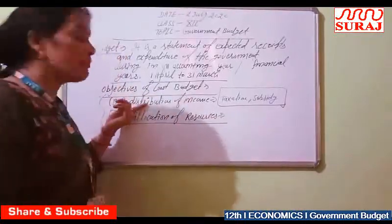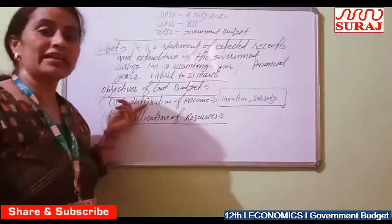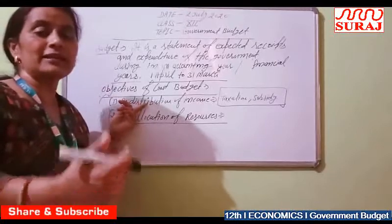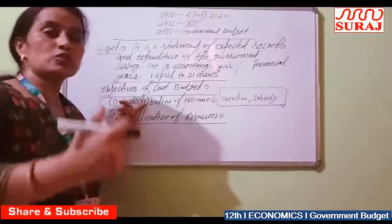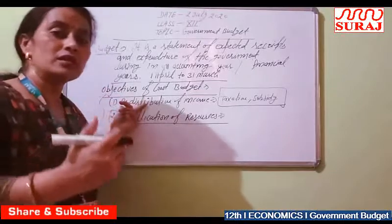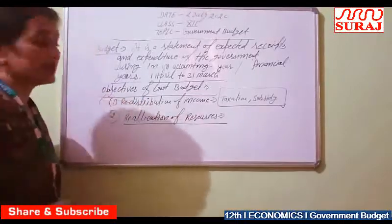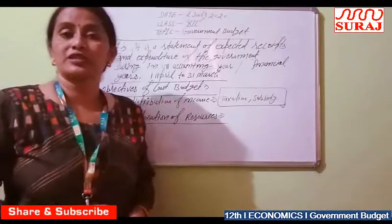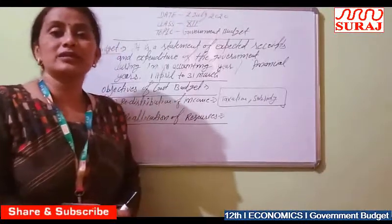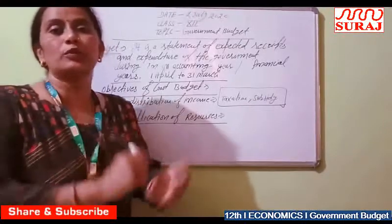By this process, through their budgetary policy, the government can control unequal distribution in our economy. Income is redistributed by the budgetary policy among the richest and poorest sections, so that the gap between the richest and poorest does not widen too much. The second objective is reallocation of resources, which means redistributing resources once again.